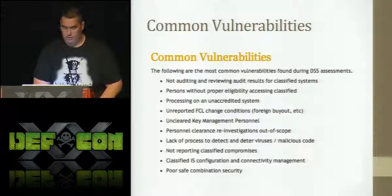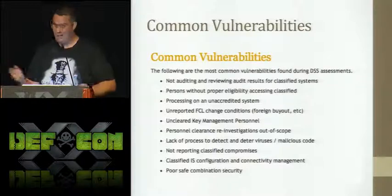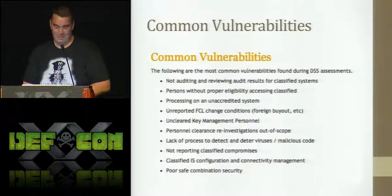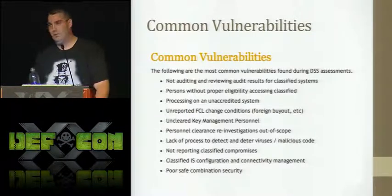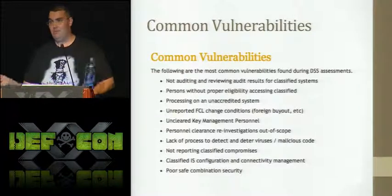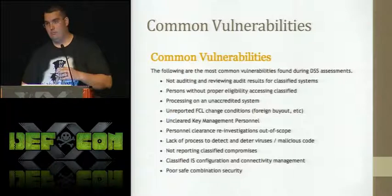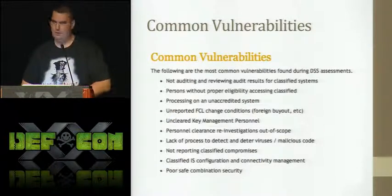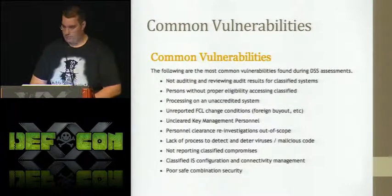Here are some common vulnerabilities pulled from the DSS website. Not auditing is the top one. Not reporting classified compromises. Poor safe combinations. Processing on unaccredited systems — we go to a company and they have systems where they've just said 'let's process classified on it.' Previously we would shut them down and take the hard drives, but now we just tell them it's a good idea to submit a document for accreditation as soon as possible — we can't tell them when they have to submit it.